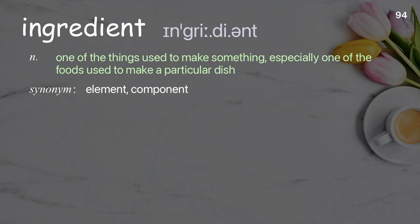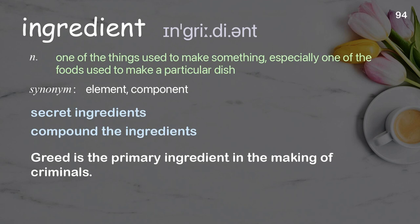Ingredient: one of the things used to make something, especially one of the foods used to make a particular dish. Examples: secret ingredients, compound the ingredients. Greed is the primary ingredient in the making of criminals.